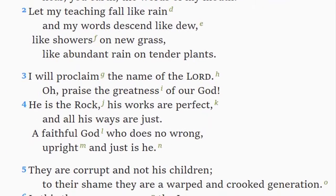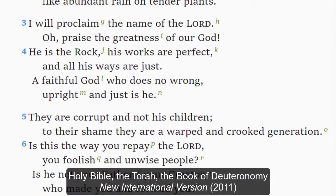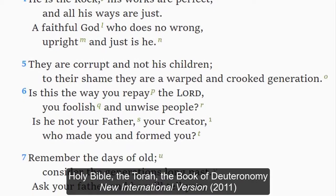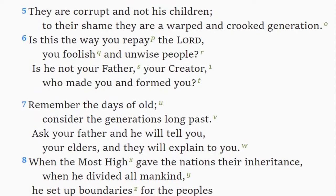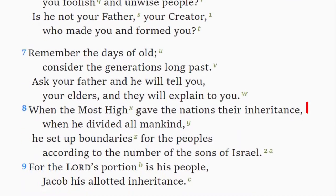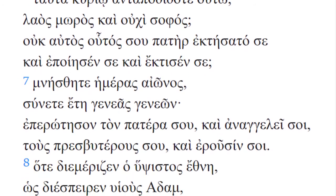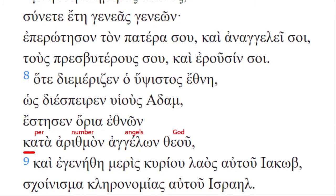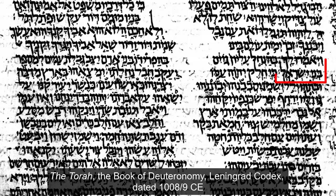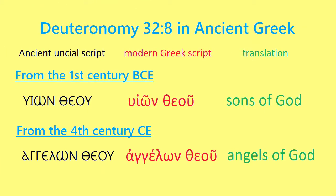In the biblical book of Deuteronomy, the prophet Moses summarized in a poem how God had apportioned land to seventy non-Israelite nations. Standard Bible translations read: 'When the Most High gave to the nations their inheritance, when He divided mankind, He fixed the borders of the peoples according to the number of the sons of Israel.' For nearly two millennia, scholars have been aware that the ancient Greek translations of Deuteronomy 32:8 read differently — whereas the oldest Masoretic Hebrew manuscripts read 'the Sons of Israel,' all Greek manuscripts read either 'Sons of God' or 'Angels of God.'